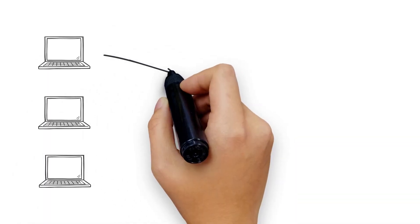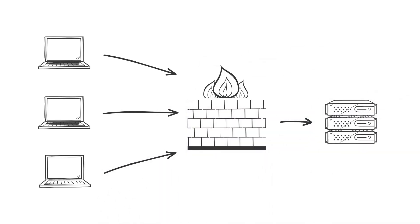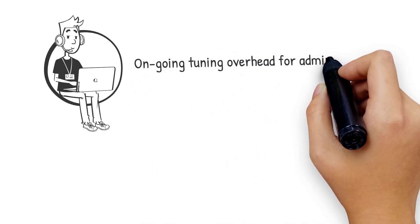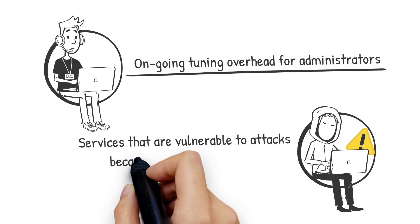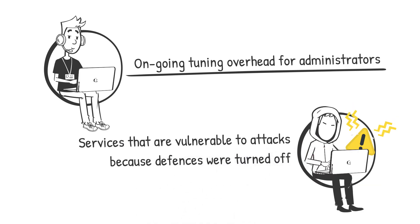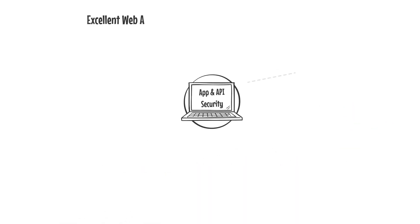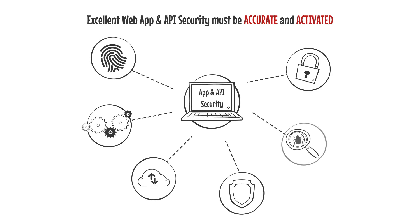Anyone with experience in the deployment of traditional web application firewalls knows that they are configured with lots of exceptions so that users could access services, but this often results in ongoing tuning overhead for administrators and services that are vulnerable to attacks because defenses were turned off. Excellent web and API security must be accurate and activated.